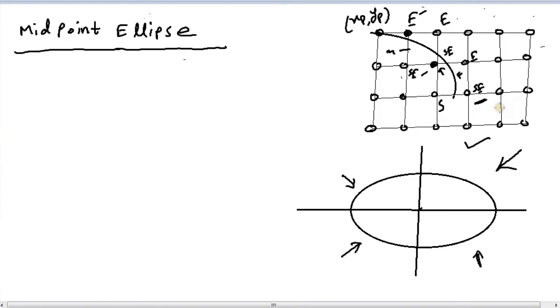This is why our ellipse quadrant is divided into two regions. This is region one, where we try to glow between E and SE. And this is region two, where we try to glow a pixel between S and SE.